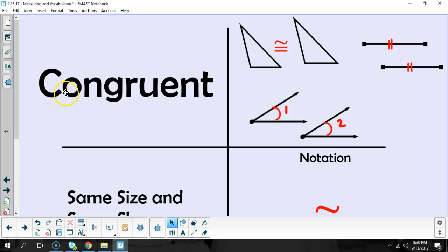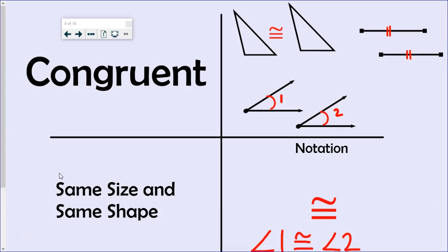One of those words is the word congruent. Congruent simply means same size and same shape. In the context of angles, it means the angle measure is the same. For example, if angle one measures 30 degrees, then angle two also must equal 30 degrees.